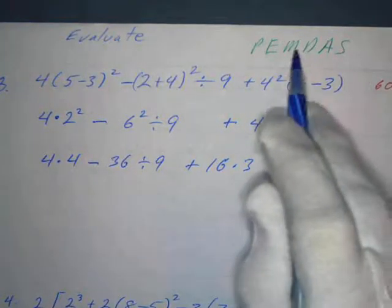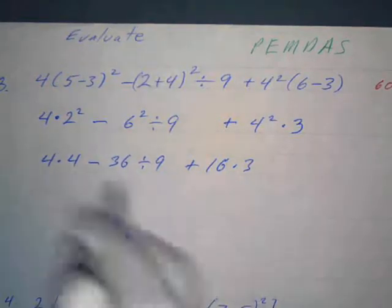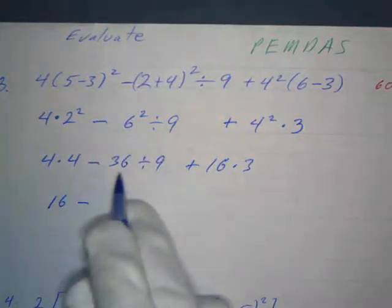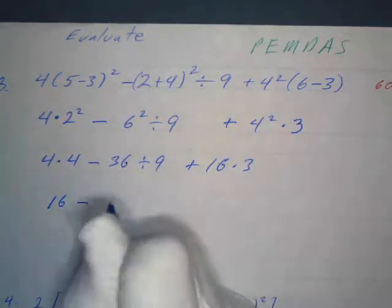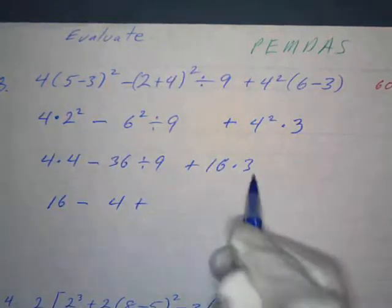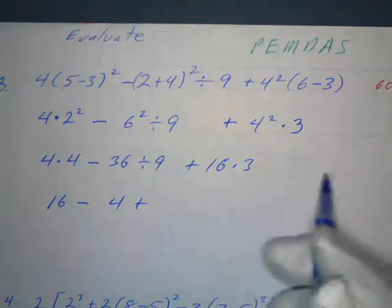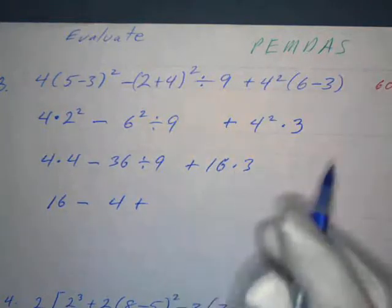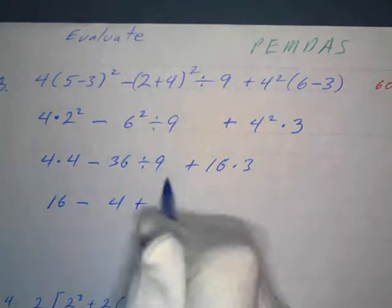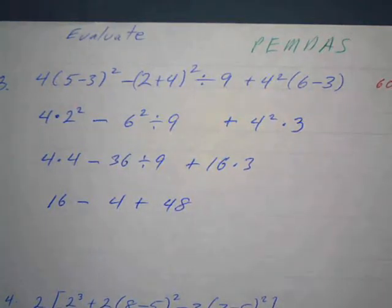Next thing we do is multiply and divide from left to right. So what's four times four? Sixteen minus, and what's thirty-six divided by nine? Well, nine goes into thirty-six four times. Plus, and what's sixteen times three? Well, three times six is eighteen, three times one is three plus one carried over is four, so it's forty-eight. We use three times sixteen a lot, so hopefully you can remember that.